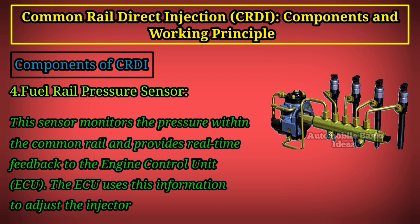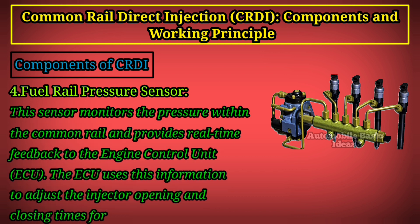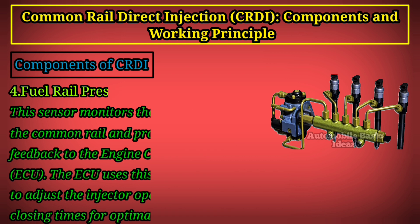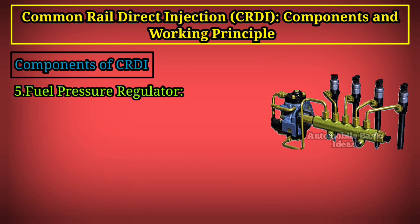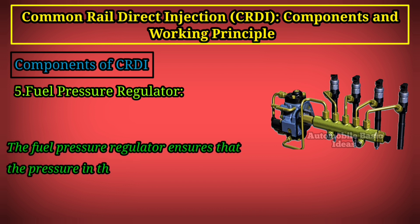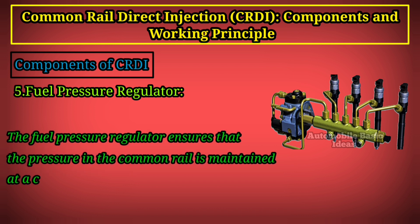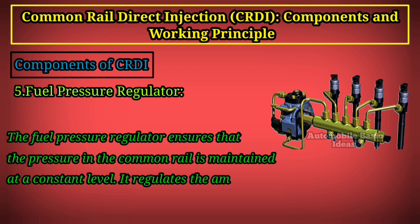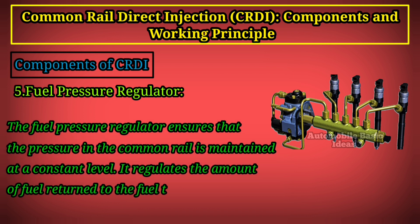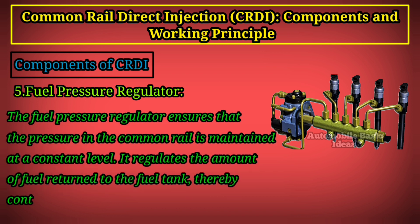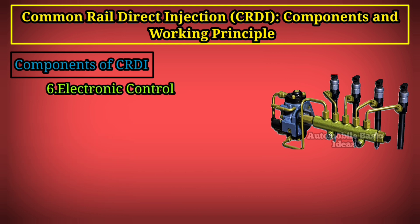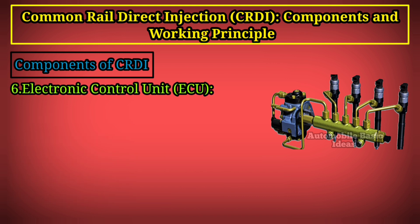The ECU uses this information to adjust the injector opening and closing times for optimal fuel delivery. Component 5 — Fuel Pressure Regulator: the fuel pressure regulator ensures that the pressure in the common rail is maintained at a constant level. It regulates the amount of fuel returned to the fuel tank, thereby controlling the rail pressure.